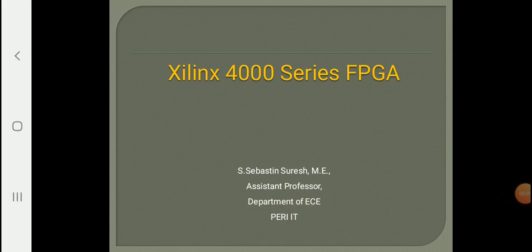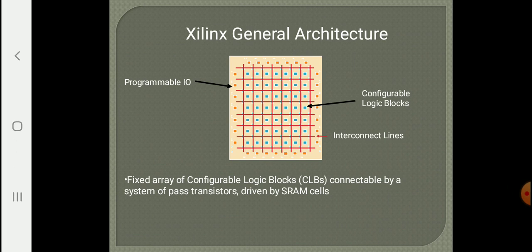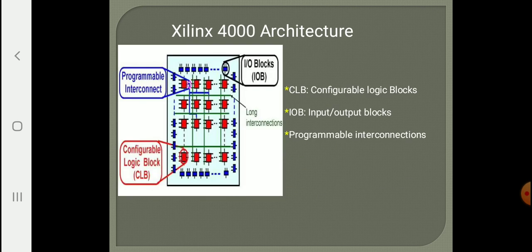Hello everyone, today we are going to see about Xilinx 4000 series FPGA. I am Sebastian Suresh, assistant professor, department of ECE, Perry Institute of Technology. The general architecture of any FPGA will have three major blocks: one is configurable logic block, second one is programmable I/O blocks present at the periphery, and interconnect lines which run between the configurable logic blocks. Xilinx 4000 architecture follows this same basic structure.